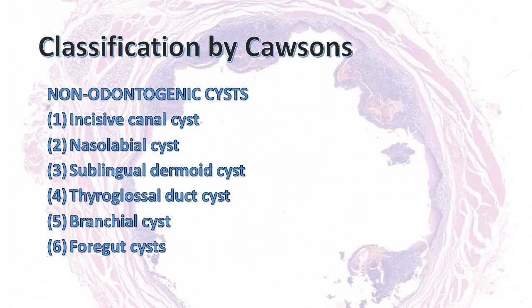Coming to the classification given by Cossens, it can be classified into incisive canal cyst, nasolabial cyst, sublingual dermoid cyst, thyroglossal duct cyst, branchial cyst, and foregut cysts.